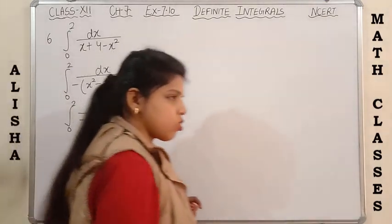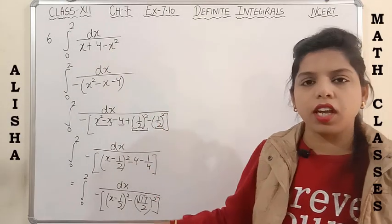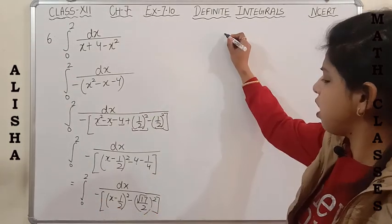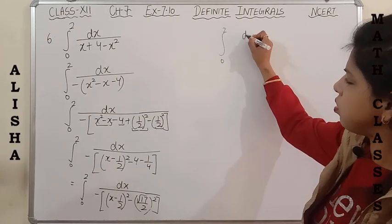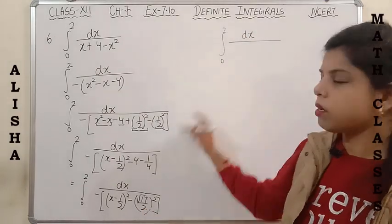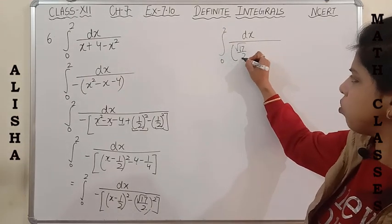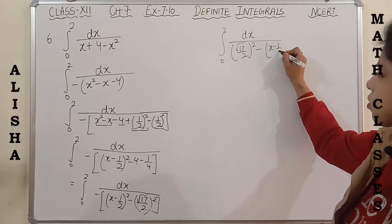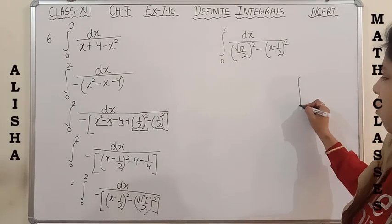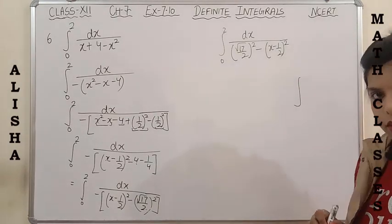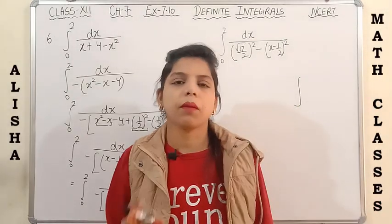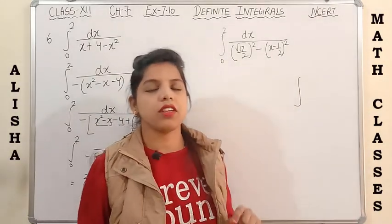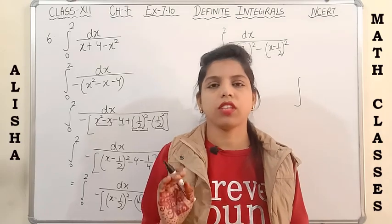Now I hope you have understood how we have rewritten this quadratic in the form of x² minus h². Shifting the negative sign inside, I get the integral from 0 to 2 of dx, where the term becomes positive: (√17/2)² is positive and the other term becomes negative. We have done this particular type of function in exercise 7.5, where I gave a brief introduction regarding this formula.